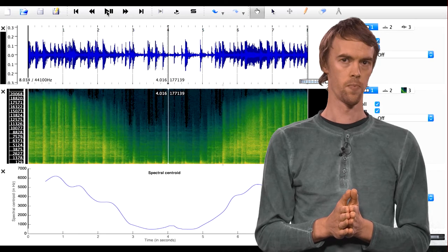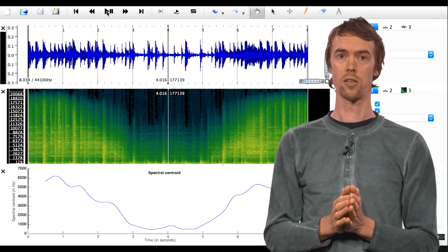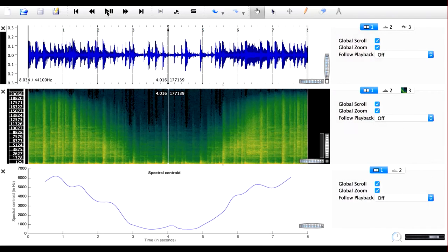Let's have a look at an example of how the spectral centroid changes when the brighter parts of the sound are filtered out. This example shows an analysis of a drum beat with the waveform on top, spectrogram in the middle, and the spectral centroid at the bottom.